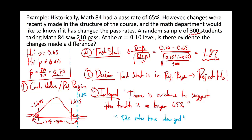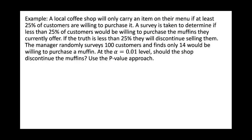Even if you didn't go get a critical value here, you could look at the test statistic and see that it's pretty far away from what we would expect to see. So you can actually do a hypothesis test without getting the critical values — and there's something called a p-value approach to hypothesis testing.